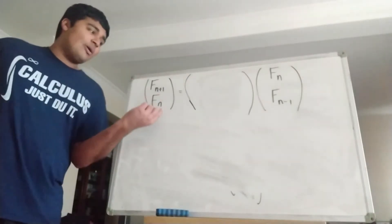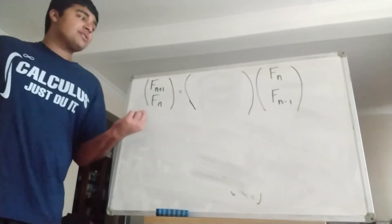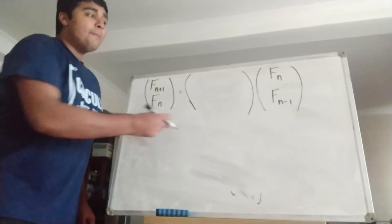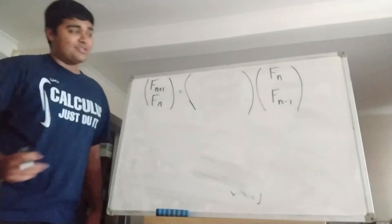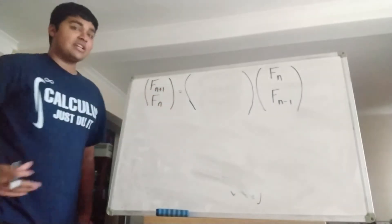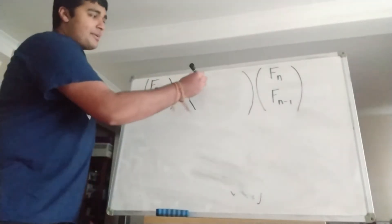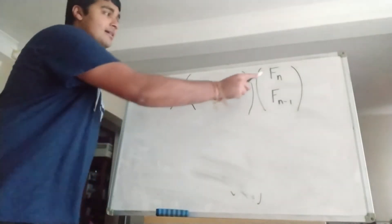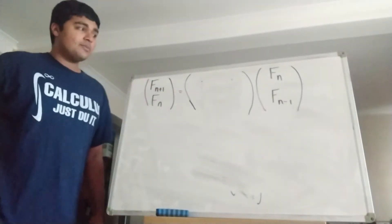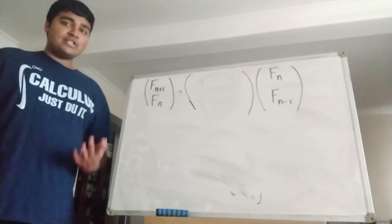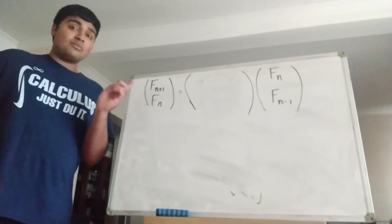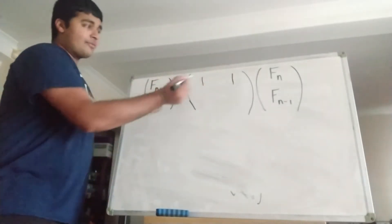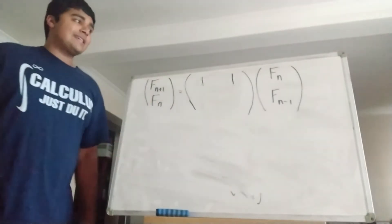Okay, so we're going to start off with a column vector with two elements, Fn plus 1 and Fn. And what we want to do is write it as some 2 by 2 matrix, which I've left blank for now. We're going to fill in the elements in just a second, multiplied by this column vector Fn, Fn minus 1. We're going to first worry about the top row. Remember how matrix multiplication works: we get Fn plus 1 equals this element times Fn plus this element times Fn minus 1. By the recurrence relation, we know Fn plus 1 equals Fn plus Fn minus 1, so we should put 1s in both positions. And of course, now our top line is true: Fn plus 1 does indeed equal Fn plus Fn minus 1.